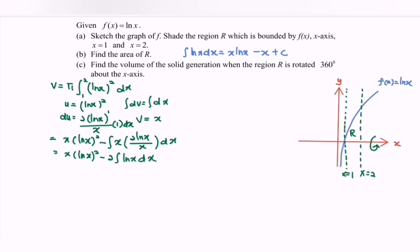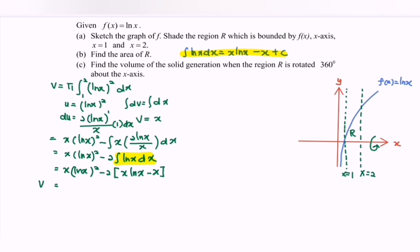Notice that we have already integrated ln x in the previous part. So substituting that result, we have x(ln x)² minus 2 times (x ln x minus x). Rewriting, the volume expression inside the brackets becomes x(ln x)² minus 2x ln x plus 2x, evaluated with limits 2 and 1.